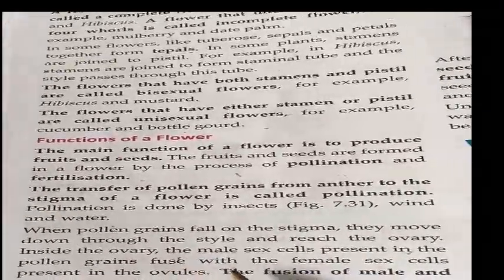When pollen grains fall on the stigma, they move down through the style and reach the ovary. Inside the ovary there are ovules. The male sex cell present in the pollen grain fuses with the female sex cell present in the ovules.